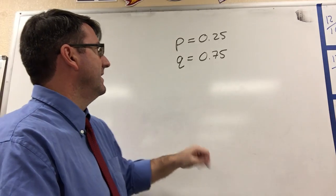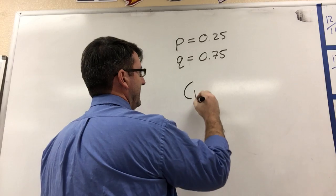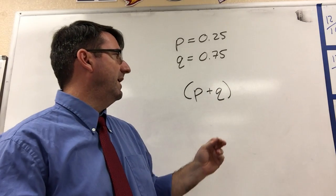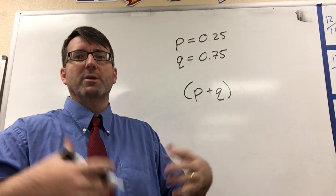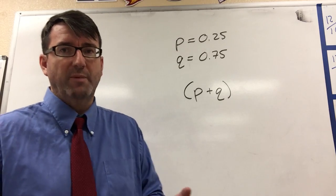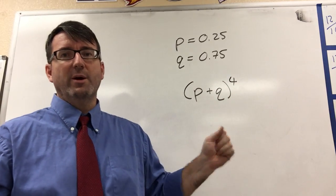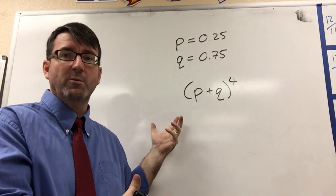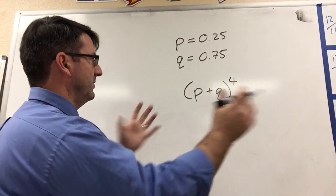And then the probabilities for this are going to be given by P plus Q taken to the N power, where N is the number of tries that you make. In this case, the number of yogurts that Shirley buys. Shirley bought four yogurts. So this expansion is going to give us all of the probabilities of her getting all four winning lids, three winning lids, two winning lids, all the way down. So let's just do this whole expansion.